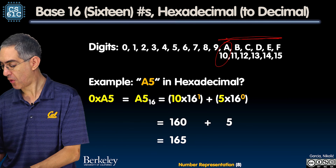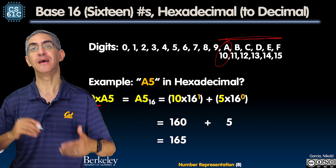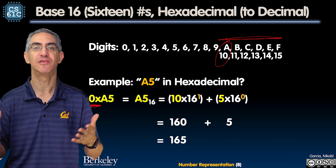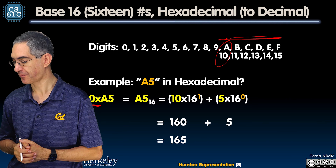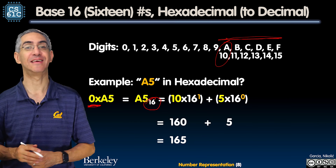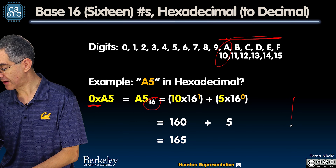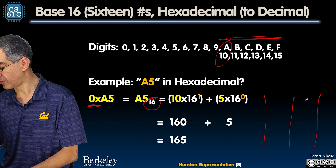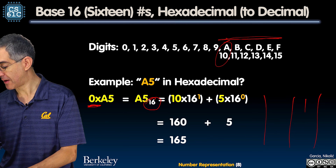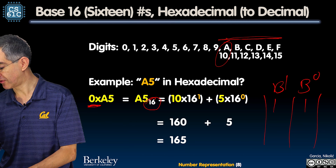Base two is exactly the same thing as base ten, just subtle. Where I said you had ten characters — ten digits — now I have two: zero and one. We always start from zero and count up. So if I have 1101, I need to indicate it's not in base ten, it's in base two.